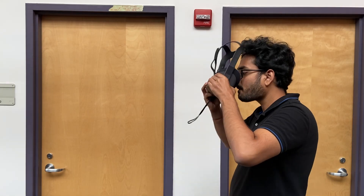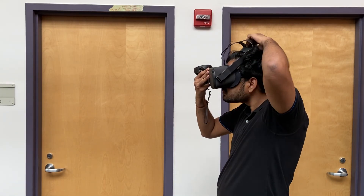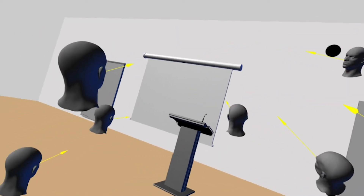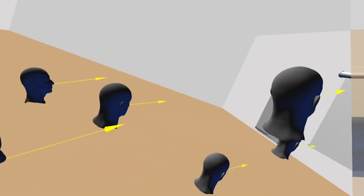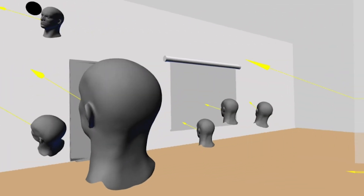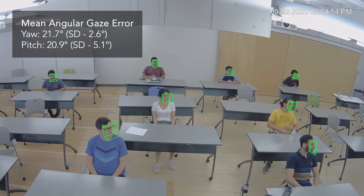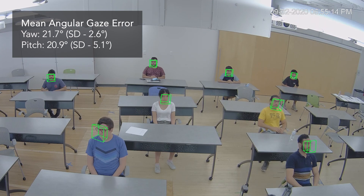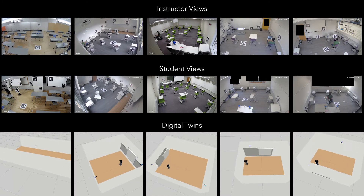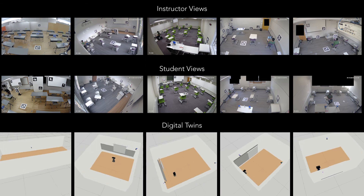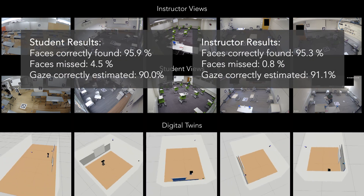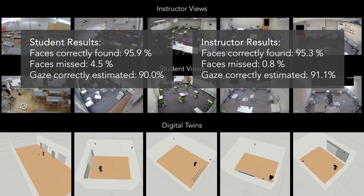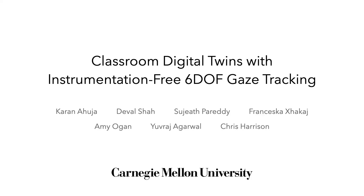Our web-based 3D interface can also be explored with a VR headset. This allows a user to walk around the digital twin and replay data from different perspectives. In addition to a controlled study with ground-truth gaze targets, we also deployed our system in five real classrooms for one semester and had human annotators evaluate our system's gaze estimation performance. Please see our paper for full technical and study details.